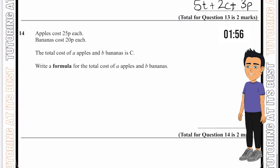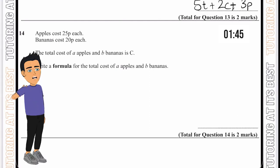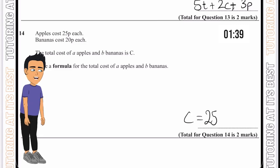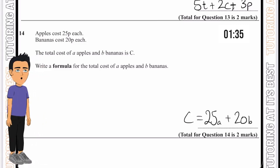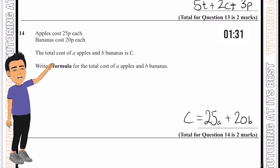Question 14. Apples cost 25p and bananas cost 20p. Find the total cost of a apples and b bananas. We know it equals c. So we'll have c equals 25a plus 20b. That is your formula for the total cost of a apples and b bananas.